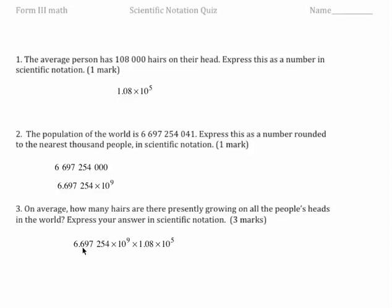Alright, so I have the 6.697254 times ten to the power of nine times the 1.08 times ten to the power of five. So I'm going to multiply the 6.697254 times 1.08. Okay, so I'm going to multiply those two numbers together and then I'm going to multiply the ten to the nine and the ten to the five.